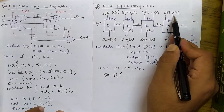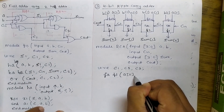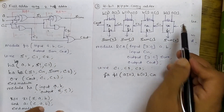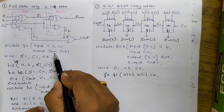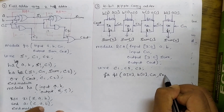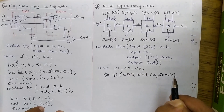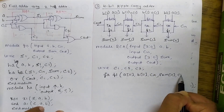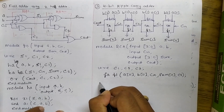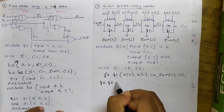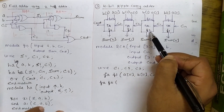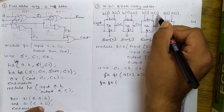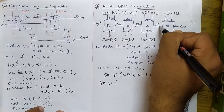For the first call, instance F1: A is mapped with A[0], B is mapped with B[0], C_in is mapped with C_in, sum is mapped with sum[0], and C_out is mapped with C1. For the second call, instance F2: inputs are A[1], B[1], C_in is mapped with C1, sum[1] is the sum output, and C_out maps to C2.